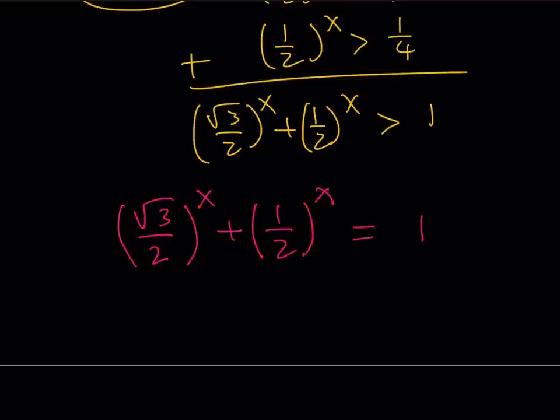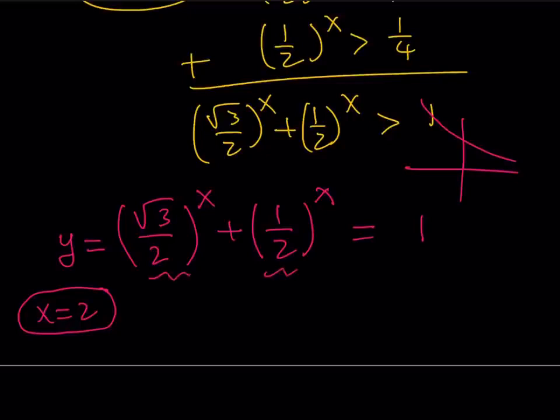Now, notice the function on the left-hand side. If you call this y equals f of x, it's a function of x. And notice that root 3 over 2 is less than 1. So, any number like base b to the power x, if b is less than 1, it's going to be a decreasing function. As you know from exponential functions, the graph is going to look like this. It's going to be a decreasing function. So, this is a decreasing function. This is a decreasing function. Their sum is also decreasing.